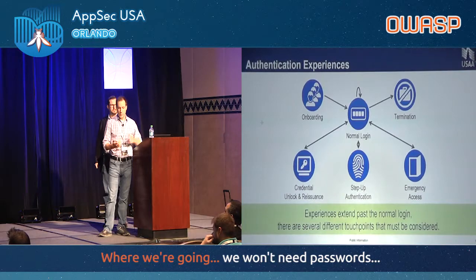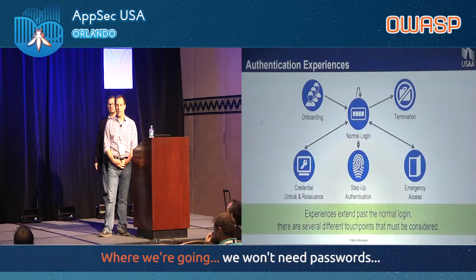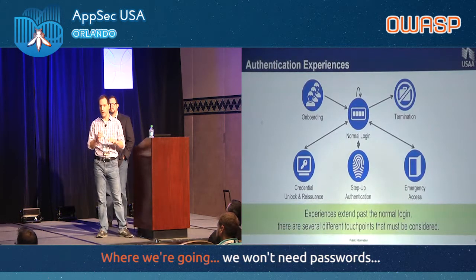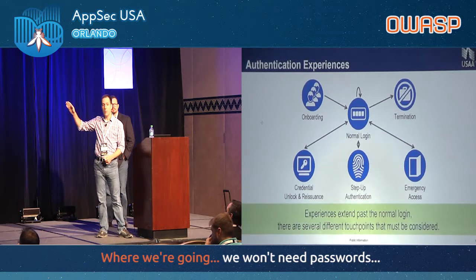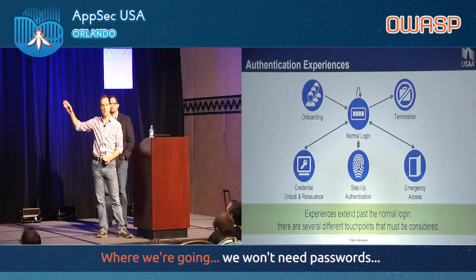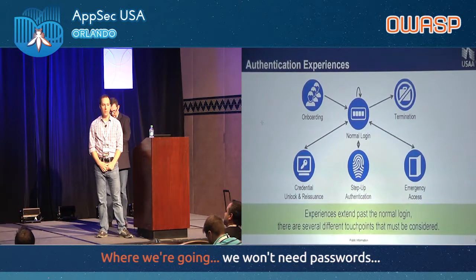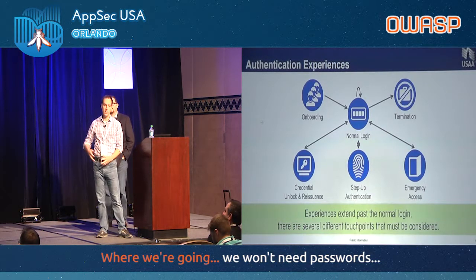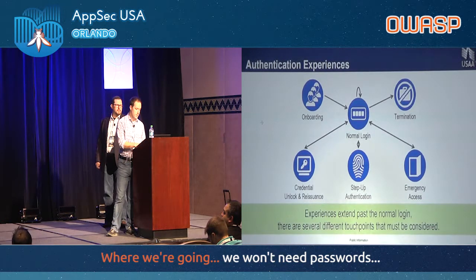We're also issuing out USB FIDO tokens. FIDO — the Fast Identity Online alliance — is a universal standard for devices to communicate with a web browser using a small cryptographic hardware security module. This enables us to provide recovery options for users when they don't have either option with them. When we brief this internally, most people don't worry about the good experiences — they worry about what's outside that bubble: the onboarding process, identity verification, how you bootstrap somebody into multi-factor authentication, credential unlock and re-issuance, step-up authentication, emergency access, and the termination process.